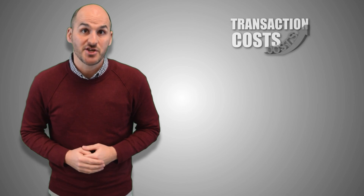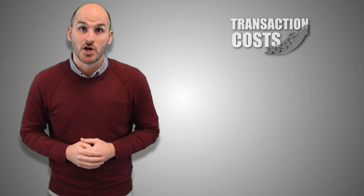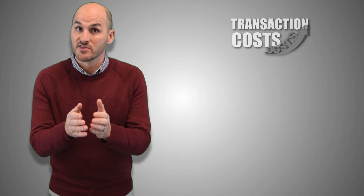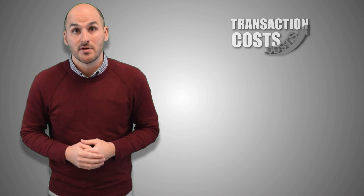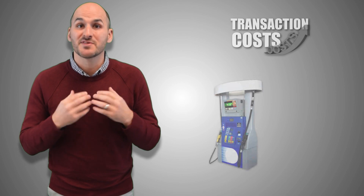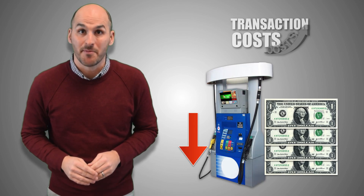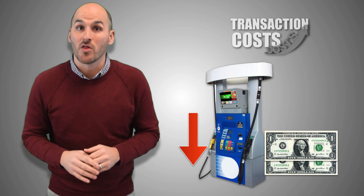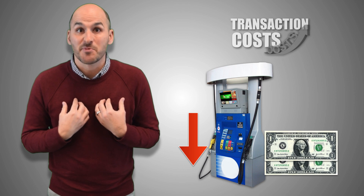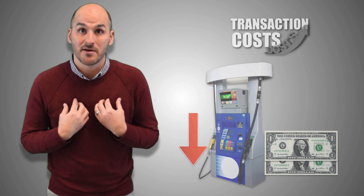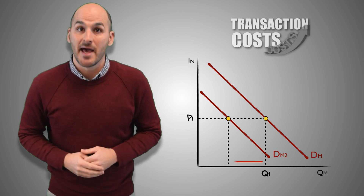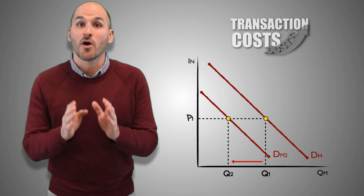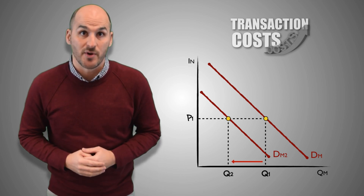Much like deflation, a decrease in transaction costs means goods and services are less expensive, and less money is needed to buy them. If my local gas station removes the ATM fee they charge at every pump, making each fill-up $3 less expensive, then I don't need as much money to buy my gasoline. So a decrease in transaction costs causes a decrease in money demand, meaning lesser quantities of money are demanded at every nominal interest rate.